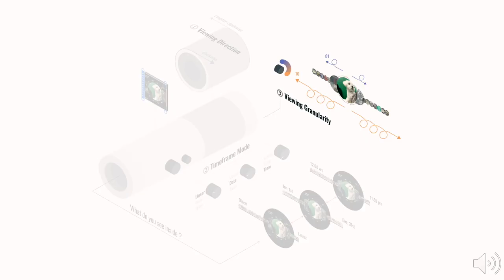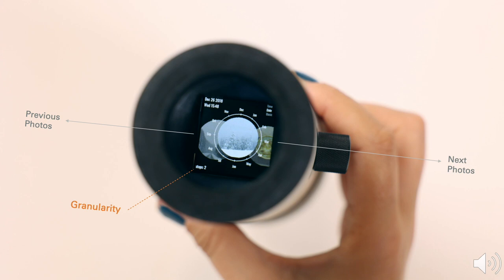The third control lets the user tune the viewing granularity, which allows faster or slower navigation during the photo viewing process. The number of viewing granularity can be seen at the bottom left corner.